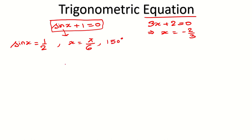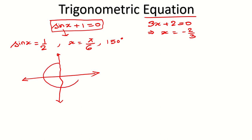Why are all these answers correct? Because all trigonometric functions are periodic functions — their values are repeated after a particular interval. You can also say all trigonometric functions are circular functions, meaning their values rotate on a circle. That's why they get repeated every time after a particular interval. So many answers will be possible.